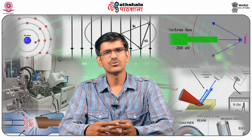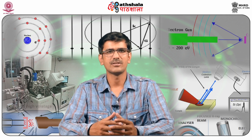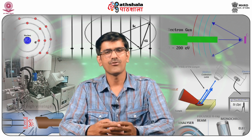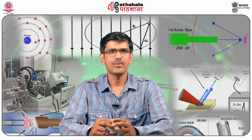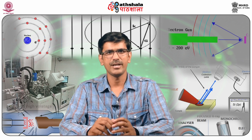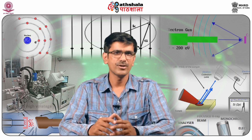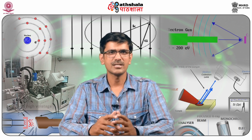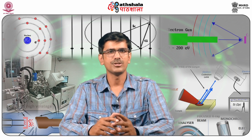EDX involves the use of x-rays. X-radiation, composed of x-rays, is a form of electromagnetic radiation. Electromagnetic radiation is a form of energy that is all around us and takes many forms such as radio waves, microwaves, x-rays, and gamma rays. Most x-rays have a wavelength ranging from 0.01 to 10 nanometers.